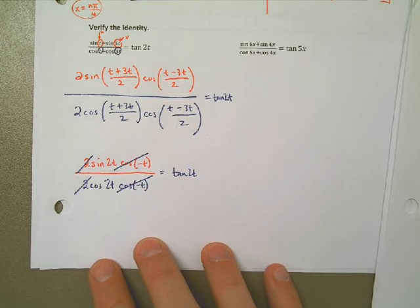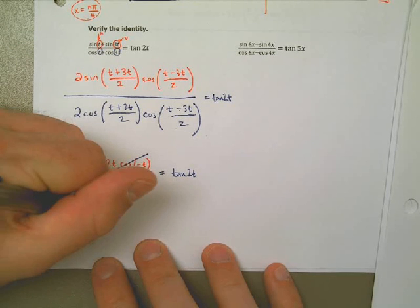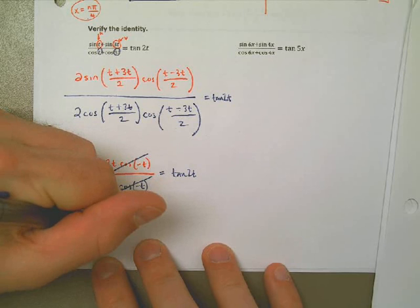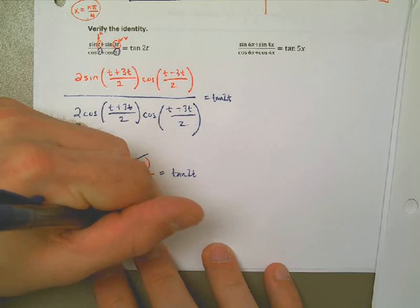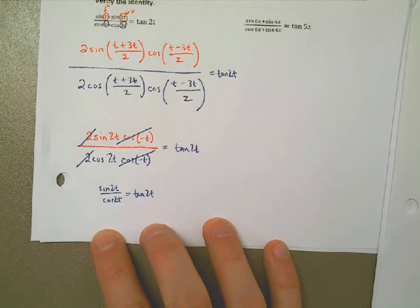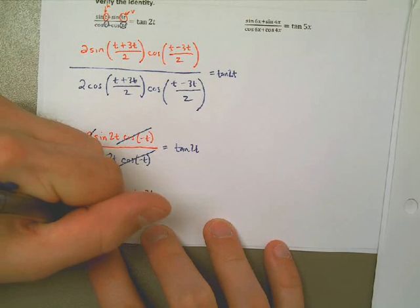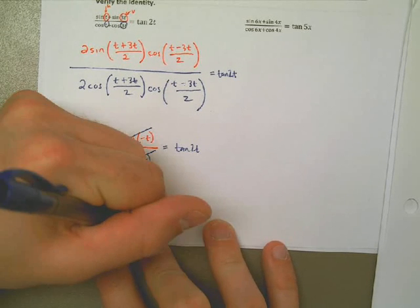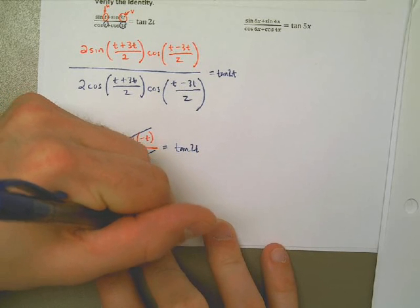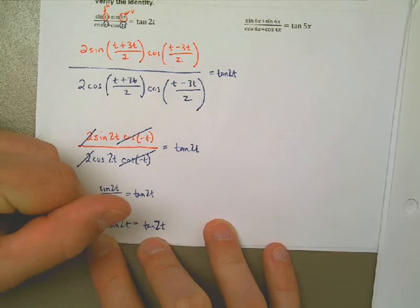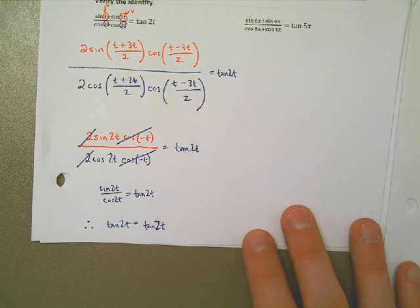So I say this. Sine over cosine is tangent. Tangent of 2t equals tangent of 2t. If you really want to impress your math teachers, you put the therefore symbol. Circle it, and we're done. Not that bad, right? It's just a matter of using the sum to product formulas, simplifying the stuff inside the parentheses, canceling stuff out.